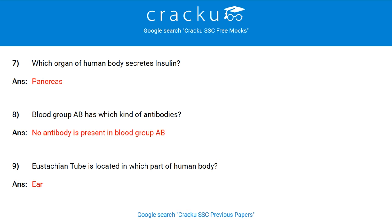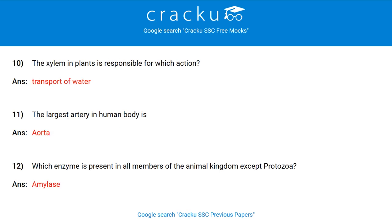Blood group AB has which kind of antibodies? No antibody is present in blood group AB. Eustachian tube is located in which part of the human body? Ear. The xylem in plants is responsible for which action? Transport of water.